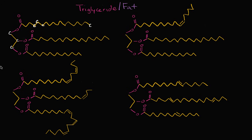You might also be wondering: what about the hydrogens? We assume that every carbon has four covalent bonds. So if there are extra covalent bonds for each of these carbons, we assume those bonds are with hydrogen. For example, this carbon right over here has two covalent bonds, so the other two must be with hydrogens. This carbon over there must be bonded to two hydrogens. This carbon, the way it's drawn, only has one explicit covalent bond, so there must be three covalent bonds to hydrogens.